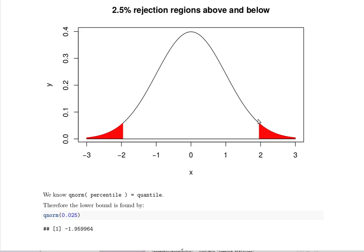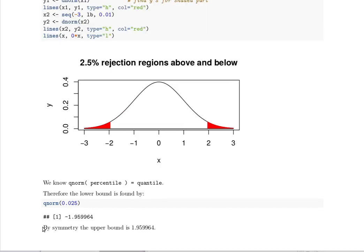Because if we could know that area below this area, we could find it that way as well. So let's do that calculation just to compare. So as we noted by symmetry, the upper bound is going to be the opposite of that number.